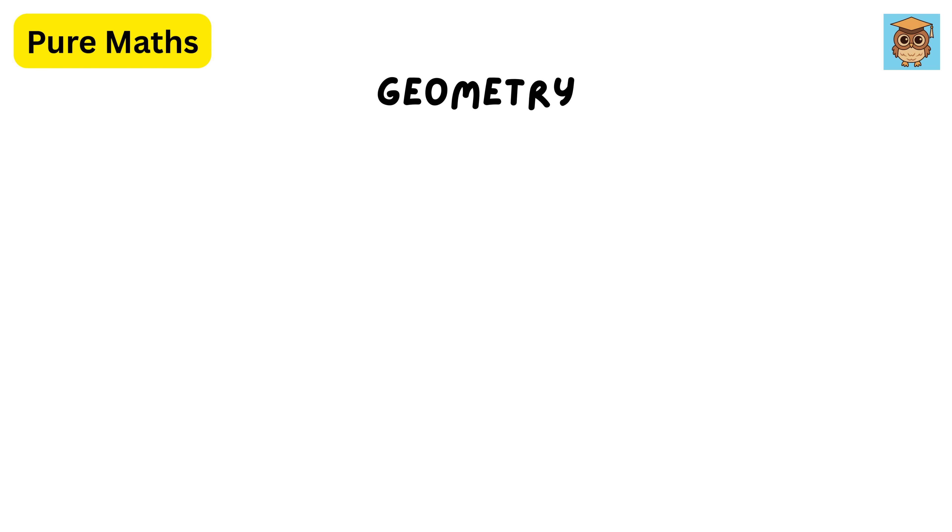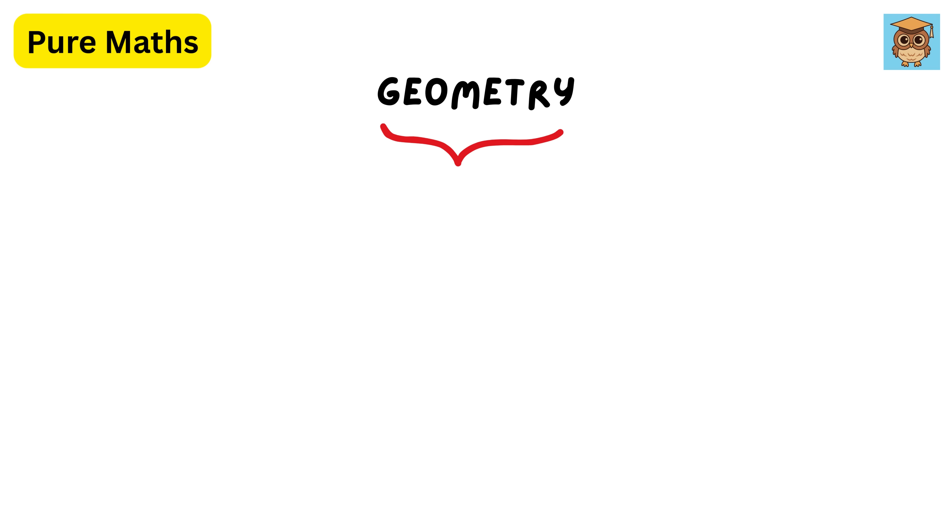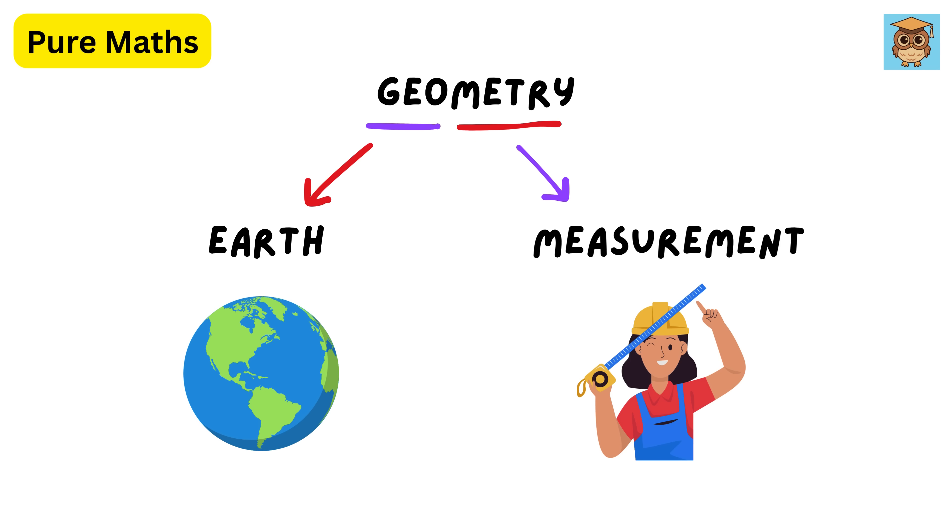It explores concepts like points, lines, angles, surfaces, and solids, and how they relate to each other. The word geometry comes from the Greek words geo, which means earth, and metron, which means measurement.